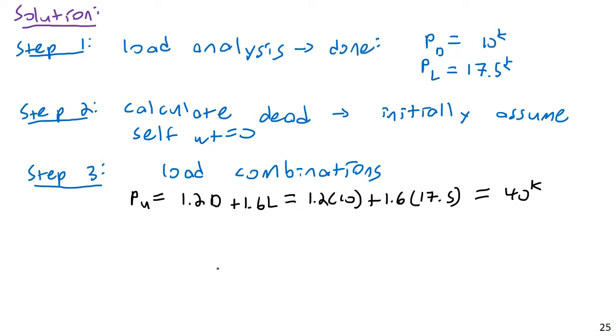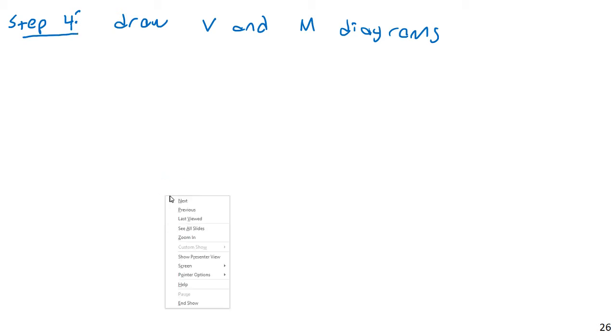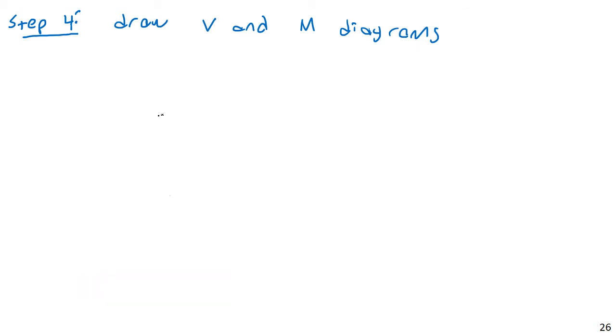Step four: draw V and M diagrams. This goes way back to statics. At this point, you know how to do shear and bending moment diagrams — this is a senior level class, and statics was several courses ago. I trust you know how to do these.